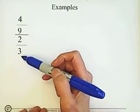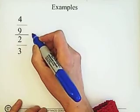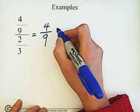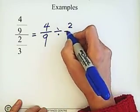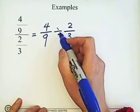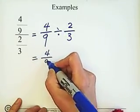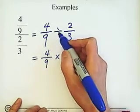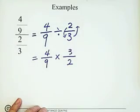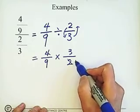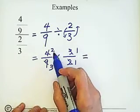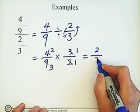First example: 4/9 over 2/3. Since both are already single fractions, we go straight to step two — write it in division form: 4/9 divided by 2/3. This is a very important step. Then follow the dividing fractions rule: change division to multiplication and flip (invert) the second fraction, which becomes 3/2. Then simplify: 4 and 2 share a common factor, and 3 and 9 share a common factor. So we get 2 × 1 = 2 over 3 × 1 = 3. The answer is 2/3.